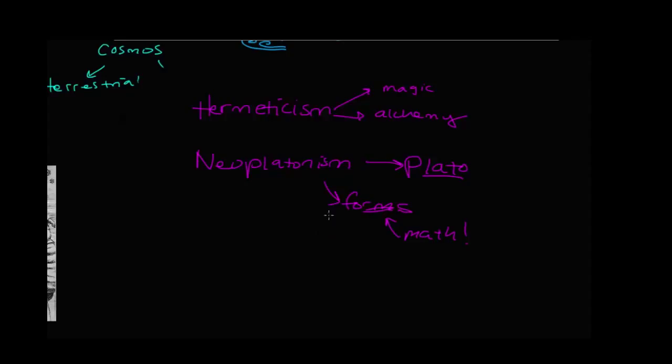...had melded into one approach to gaining knowledge known as the Platonic-Pythagorean tradition. Followers of this tradition saw math as a key to understand nature. And so I think it's obvious how these three alternative traditions, whose focus was on using mathematics to understand the universe, contributed to some of the ideas generated during the Scientific Revolution.